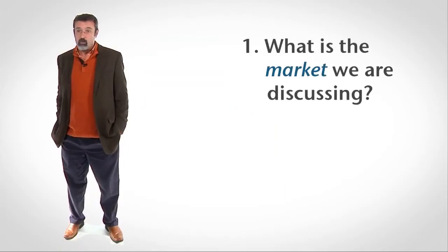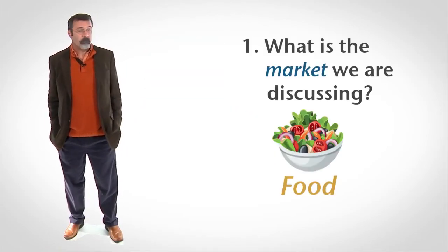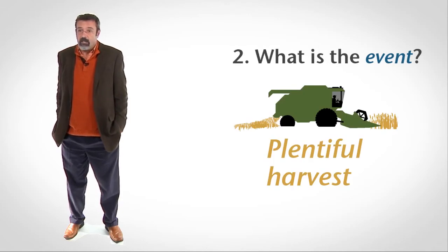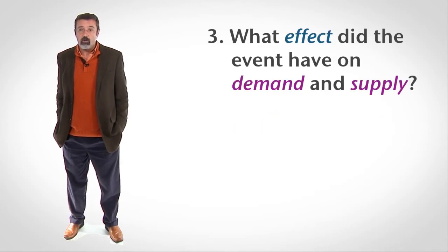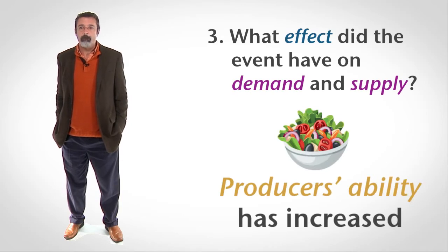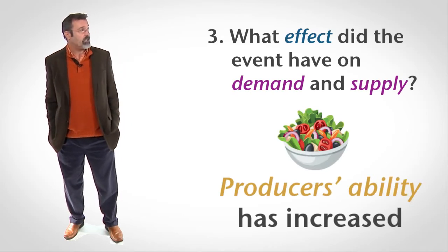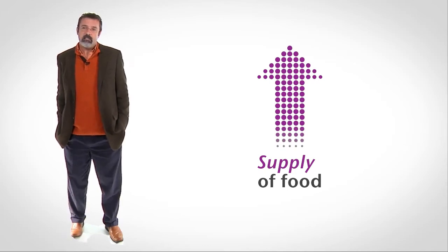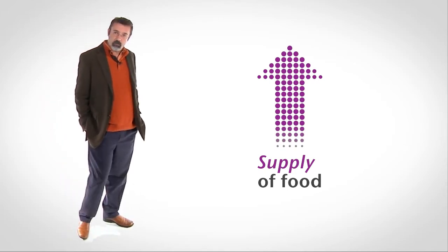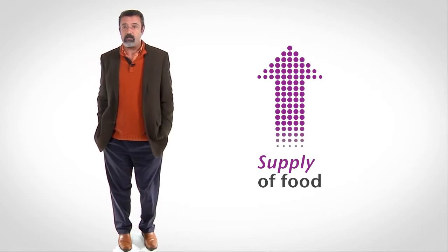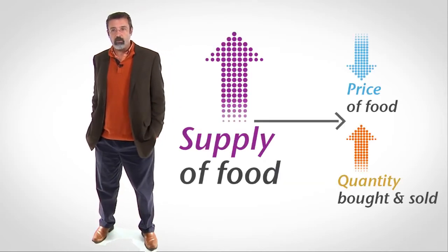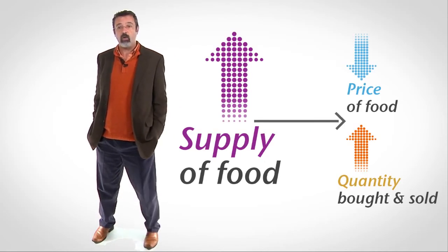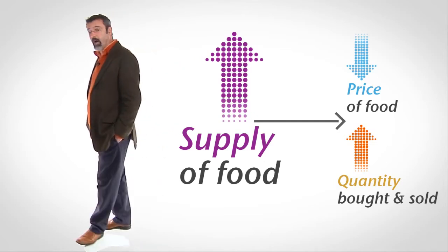Consider the market for food. What happens when farmers have a plentiful harvest? First, we're discussing the market for food. Second, the event is a plentiful harvest. Third, ignoring the price of food, producers' abilities to offer the food has increased. The supply of food has increased. When the supply of food increases, we know that the price of food will fall and the quantity of food bought and sold will rise.